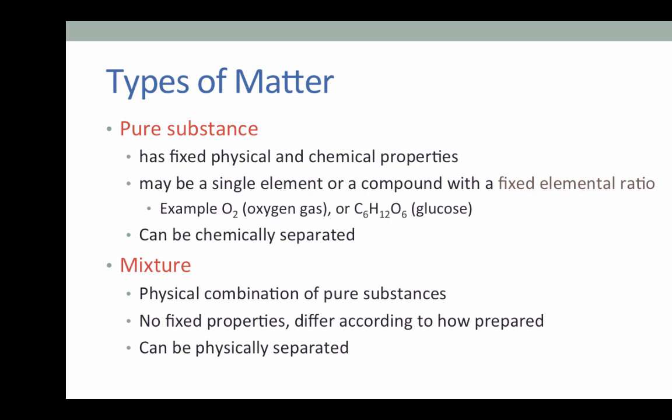For example, we know that oxygen is two oxygen atoms to make oxygen gas, where glucose, or simple sugar, is a combination of carbon, hydrogen, and oxygen at a ratio of 6-12-6.